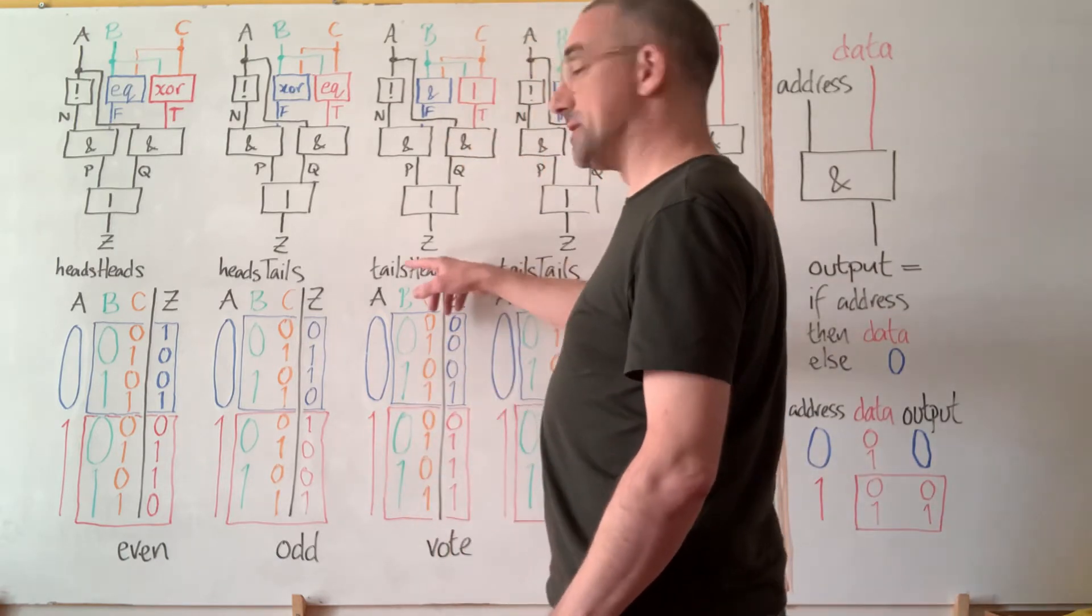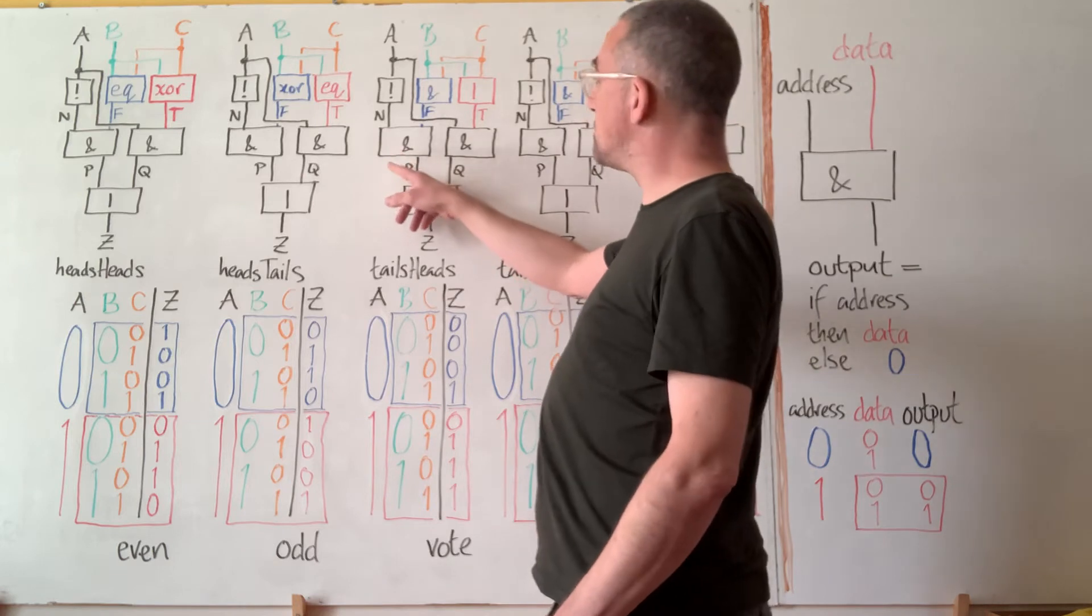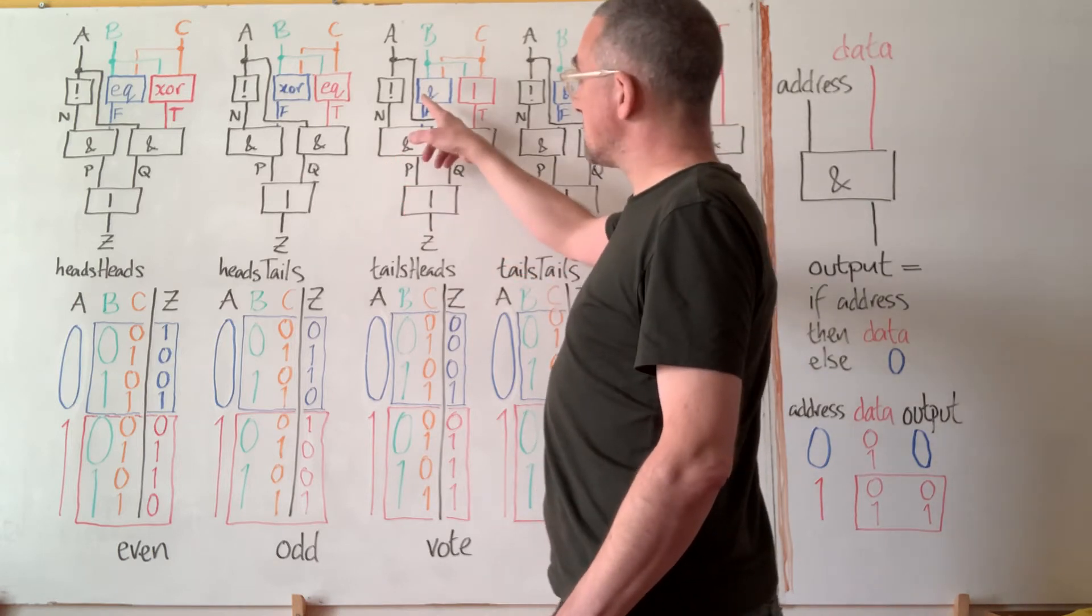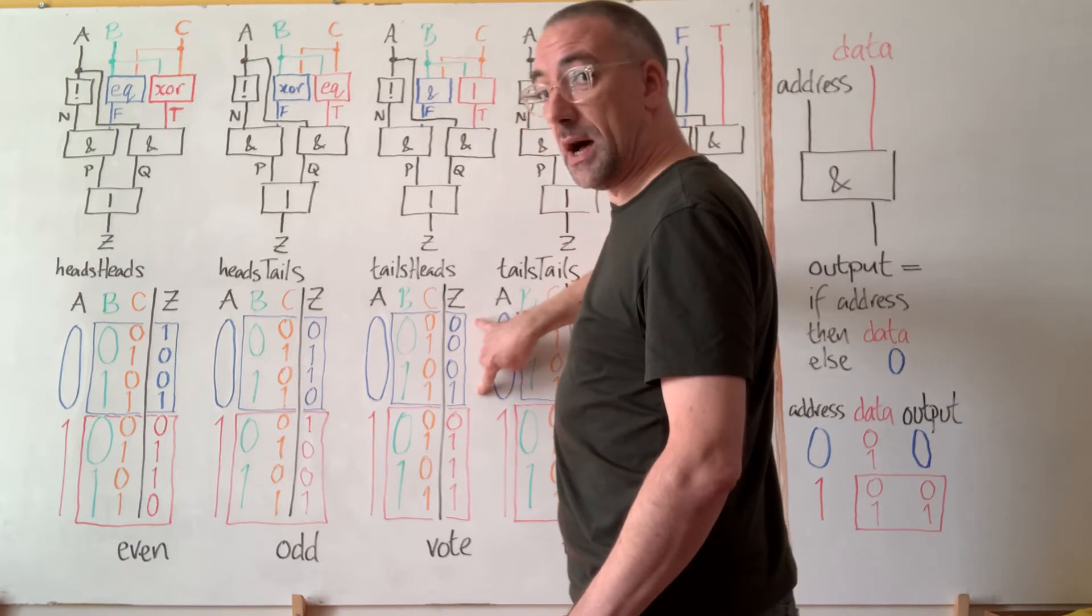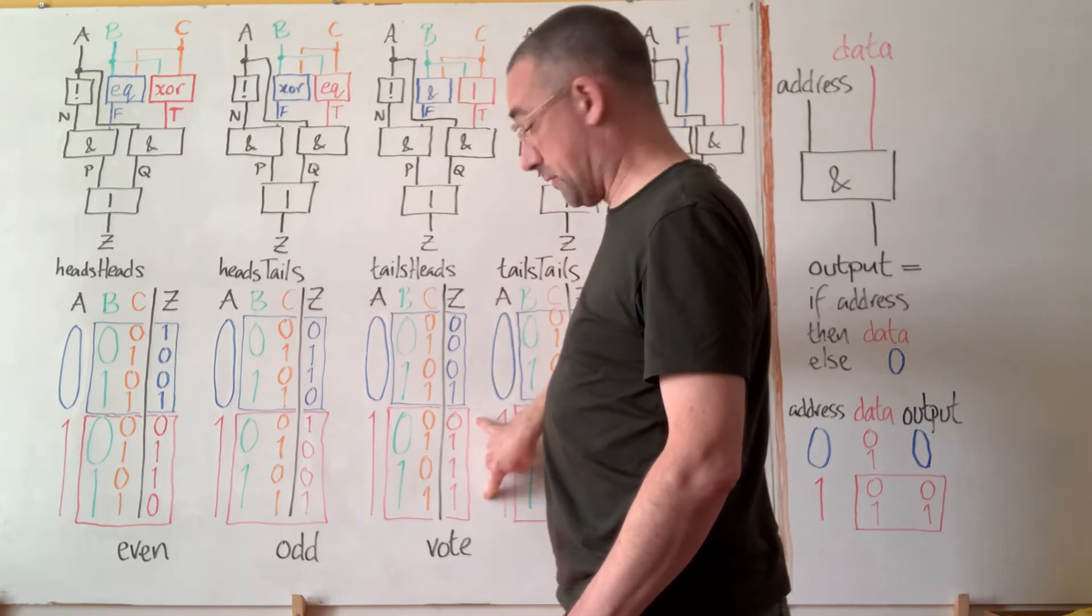Moving along to tails heads you can see that this time we are choosing between AND and OR. So the top half of the truth table looks like AND and the bottom half looks like OR.